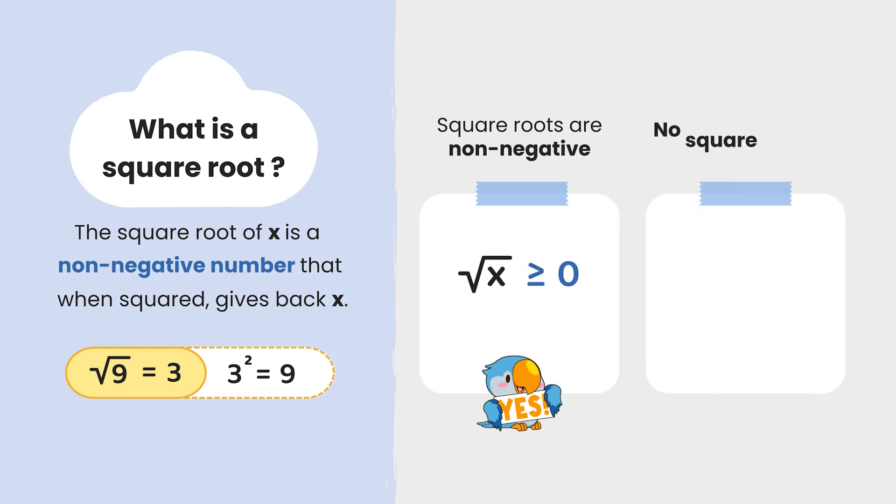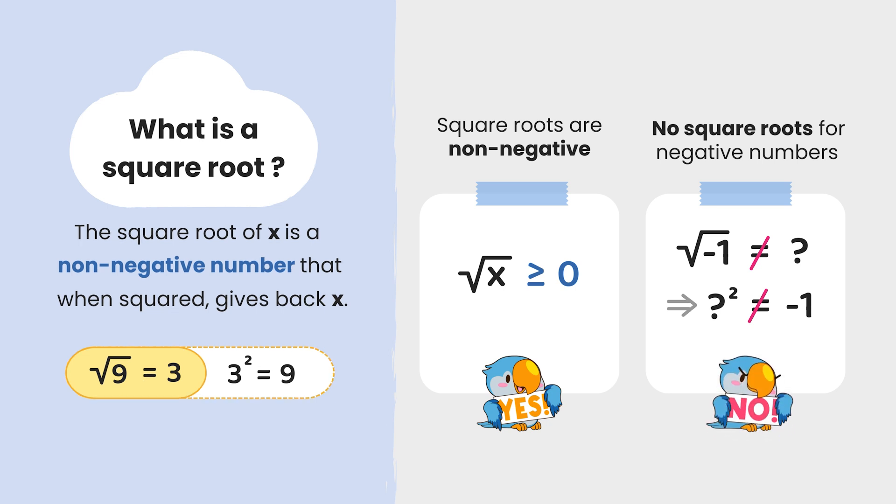Second, you can't find the square root of any negative number. Just try to find the square root of minus 1. It's impossible because all squared numbers are non-negative. Therefore, the square root of a negative number doesn't exist.